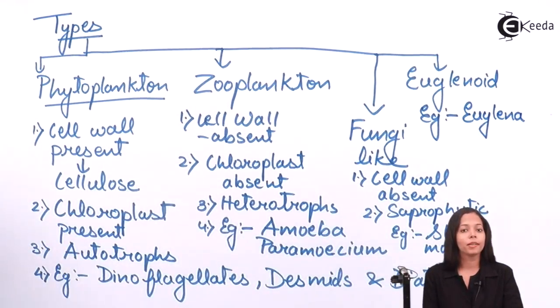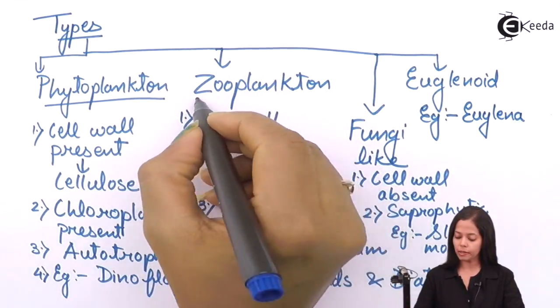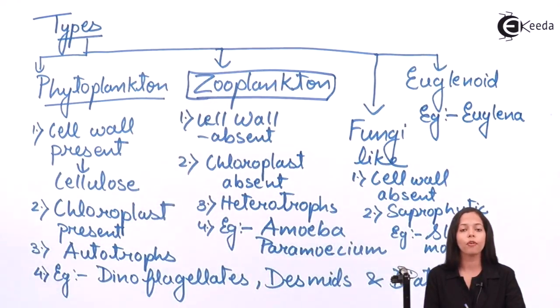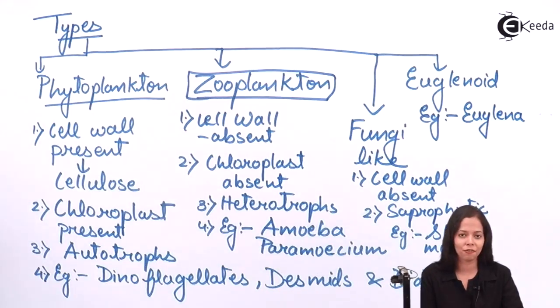Here we completed with the types of protists. Later we are going to study how zooplanktons move, the locomotory organ of zooplanktons. Thank you very much students.